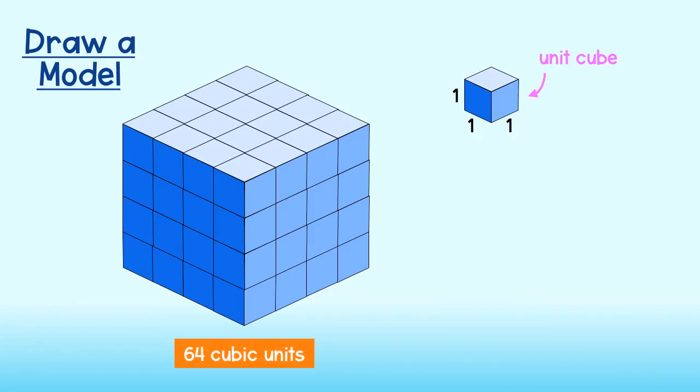Using mathematics, we say that 4 times 4 times 4 or 4 cubed is equal to 64. So working backwards, we can say that the cube root of 64 is 4.